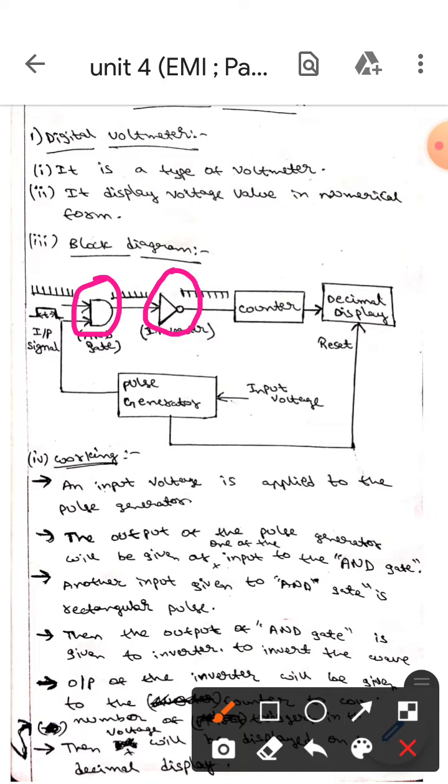The inverter is used to invert the signal. As you can see in the diagrams, the signal is inverted. Then the output of the inverter is given to the counter to count the number of triggers in the pulse.